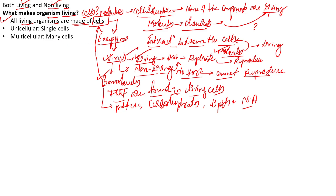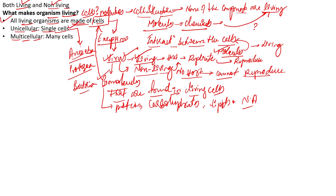On our planet Earth, you also see unicellular organisms and multicellular organisms. Unicellular organisms are made up of single cells — examples include amoeba, protozoa like paramecium, trypanosoma, plasmodium, and bacteria — the prokaryotes, all made up of single cells. Multicellular organisms are made up of many cells. The majority of organisms are actually multicellular organisms.